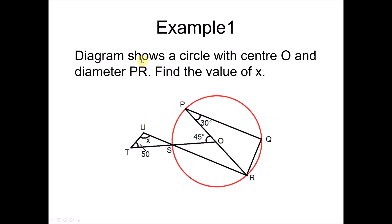Look at the first part now. This diagram shows a circle with center and a diameter PR. Find the value of X. Notice that X is one of the angles in triangle UTS, which is outside the circle. We need to first find angle UST, and in order to find this angle we need to use all the information we have here.